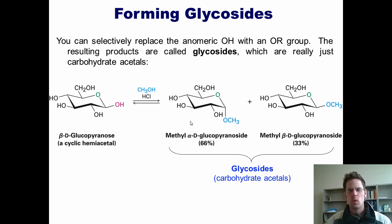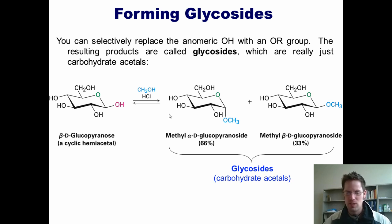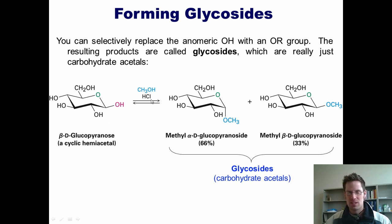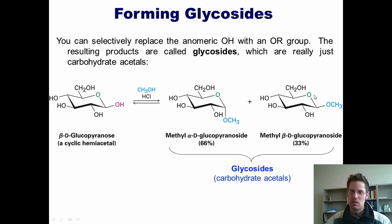Now we arrive at the word glycoside. There's a reaction that we can do to selectively replace an anomeric OH with an OR group, where R is an alkyl group. In this example, we replace the OH with a methoxy group by treating this sugar with methanol and acid. What we end up getting is two different isomers — one being alpha, where these two groups are trans, and one where they are cis, so beta. These compounds are called glycosides. Glycosides, in reality, are really just carbohydrate acetals.